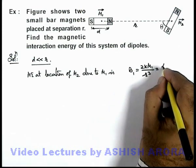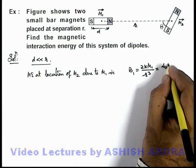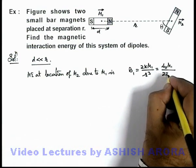This can be written as μ₀ upon 4π. This 2 gets cancelled out, so it is μ₀ m1 by 2π r³.